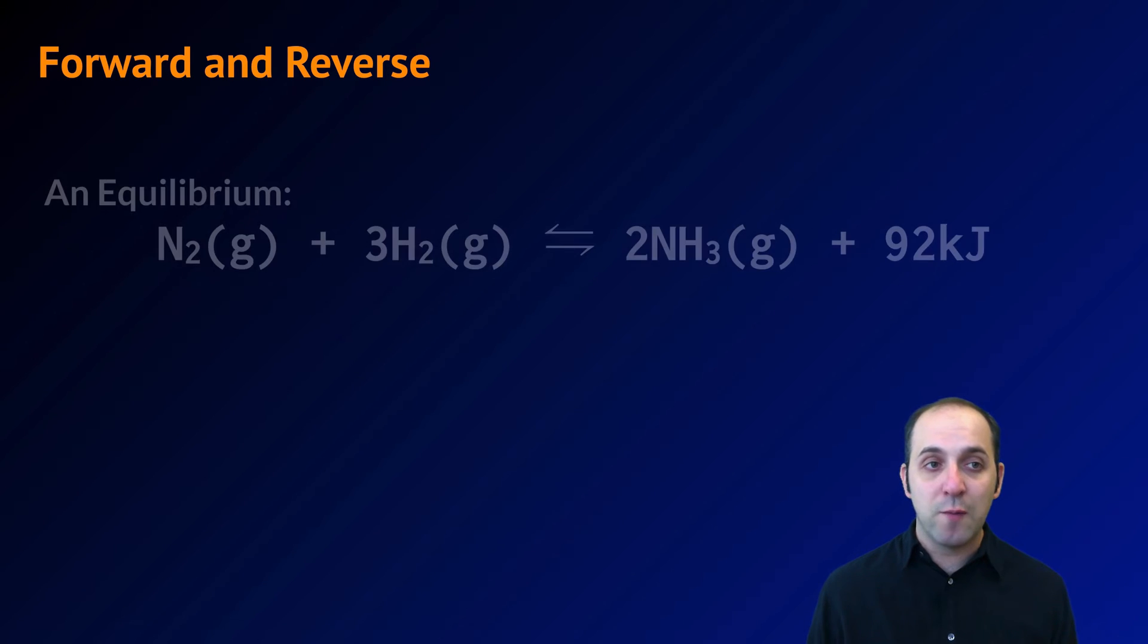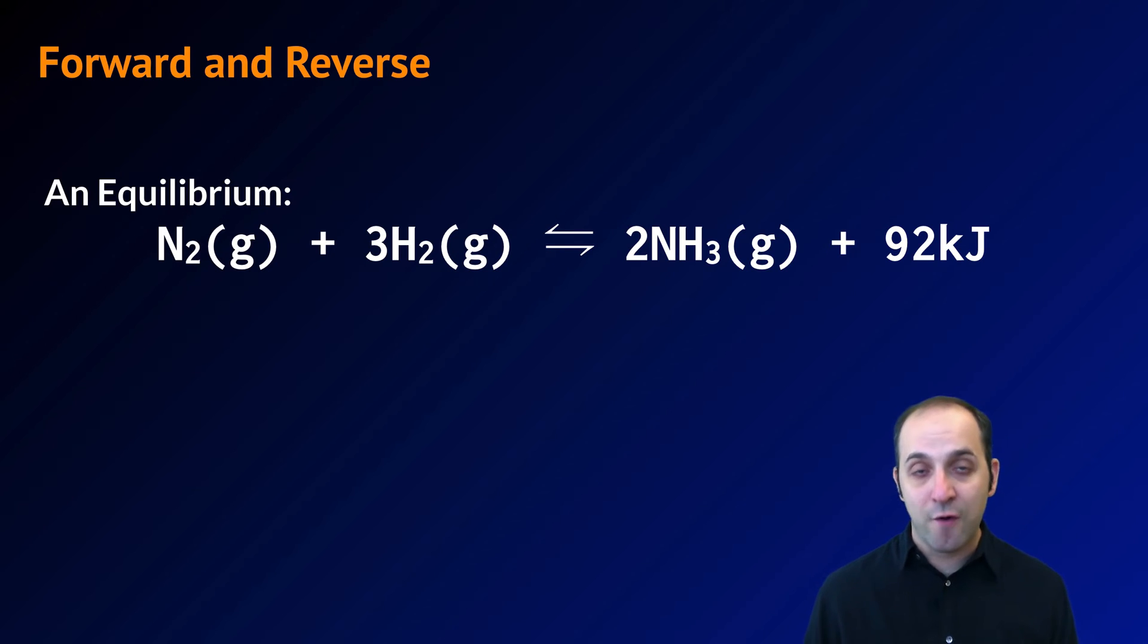If I reverse the direction of that arrow and swap the products and reactants, we've got a reverse reaction. We can actually represent both of these at equilibrium by using a double arrow. In this case, going from the material on the left to the material on the right is the forward reaction, and going from the material on the right to the material on the left is the reverse reaction.